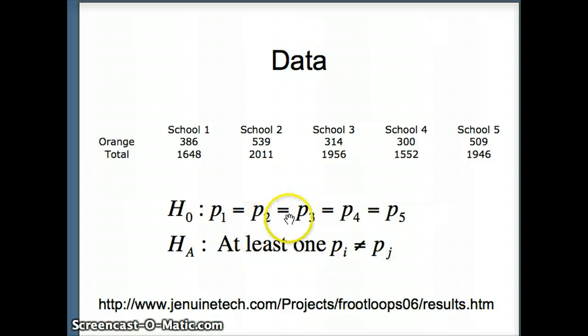H₀ will be p₁ = p₂ = p₃ = p₄ = p₅, and Hₐ will be at least one pᵢ is different from pⱼ. The location of the data is at the bottom of the page.